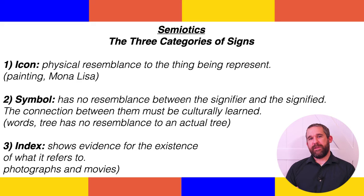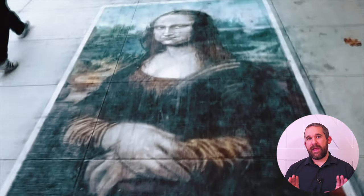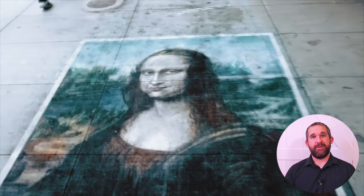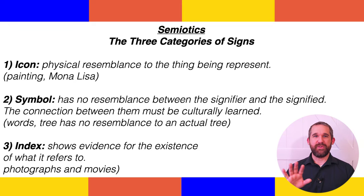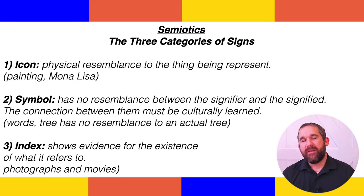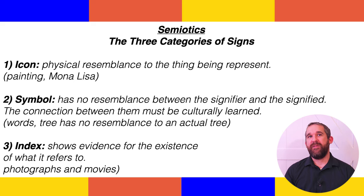Icons are the physical resemblance to the thing being represented. Think of a painting or art like the Mona Lisa. We see the painting and we know that it was an actual person, but we're not able to go see for ourselves — we have to take the representation as a stand-in for the real thing. Symbols have no resemblance between the signifier and the signified; this connection must be culturally learned. This is where words come in. Think of the word 'tree' — written out T-R-E-E, it has no resemblance to an actual tree, but when we say or look at the word tree, it's a symbol that carries meaning.